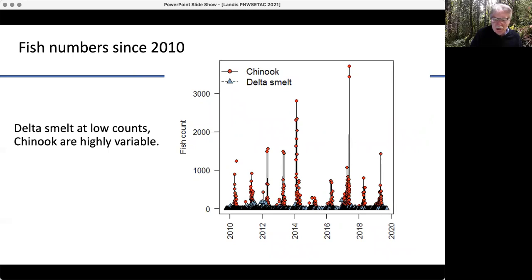Fish numbers go up and down. Chinook go up and down with the water to some degree, so highly fluctuating populations. The delta smelt, not so much, they're always low.